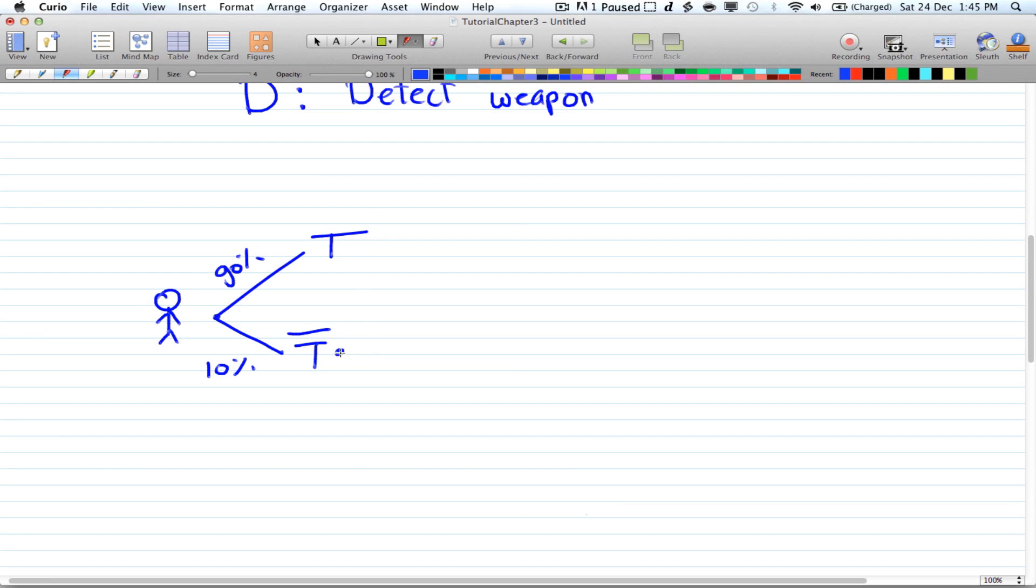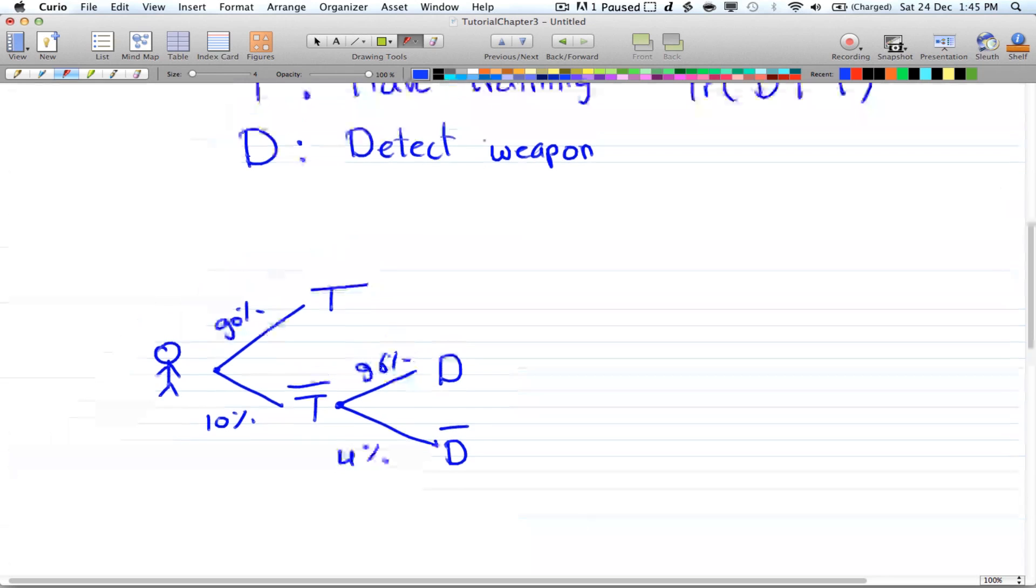they failed, so they do not 4% of the time. And notice that if you're giving these values in decimals, then it's just 1 minus the number, because remember probabilities can only go up to 1. And that leaves out 96% for detecting a weapon given that you don't have training.